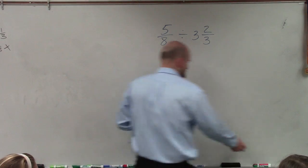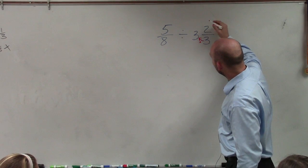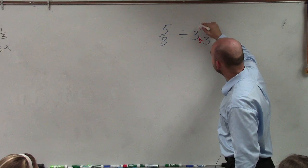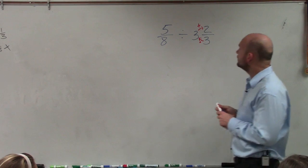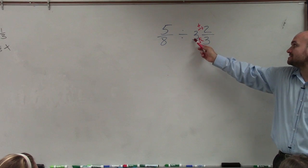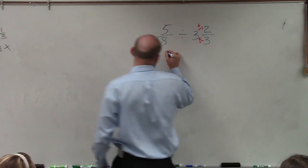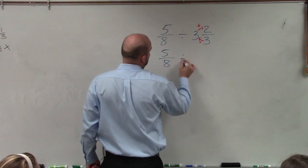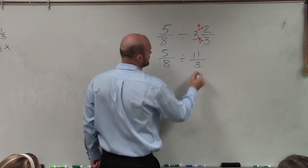So again, to do that, we take our denominator, multiply it by our whole, and then add it to our numerator. So what I have is 3 times 3 is 9, plus 2 is 11. So now I can rewrite this as 5/8 divided by 11/3.